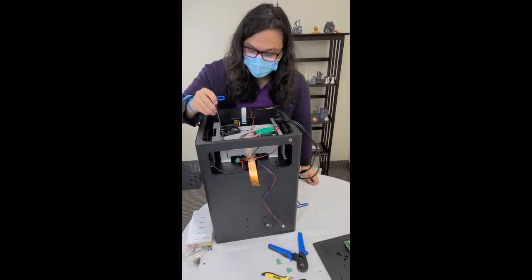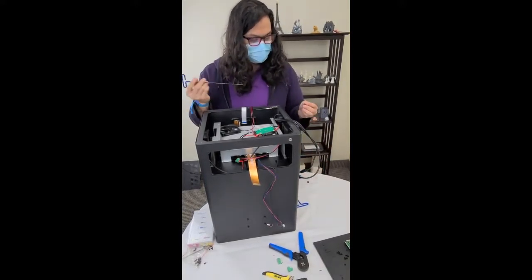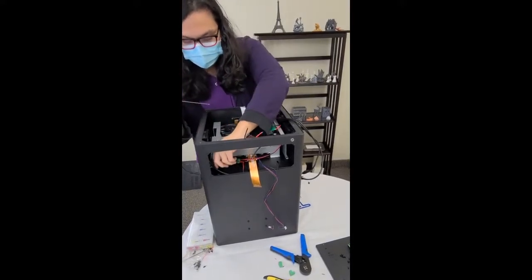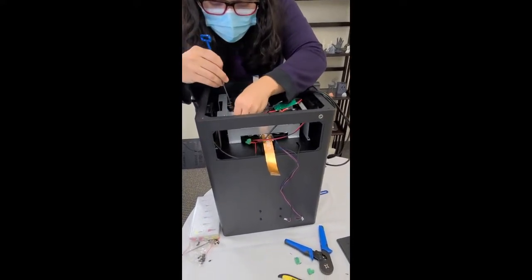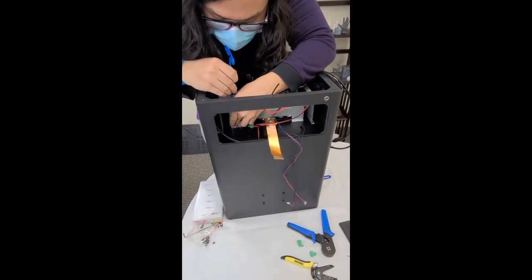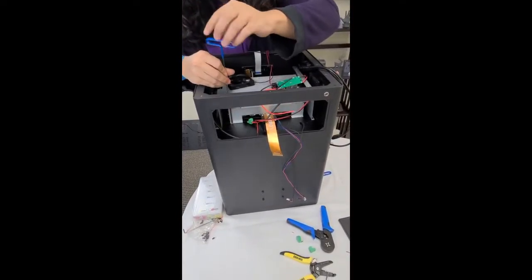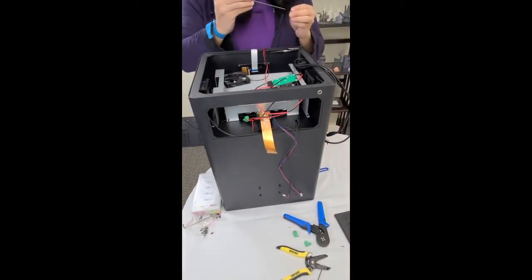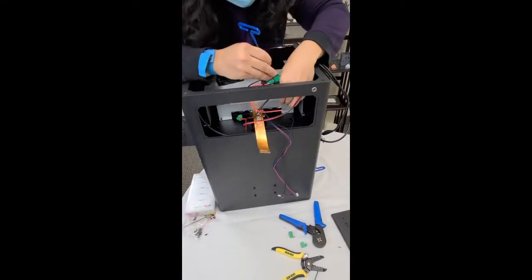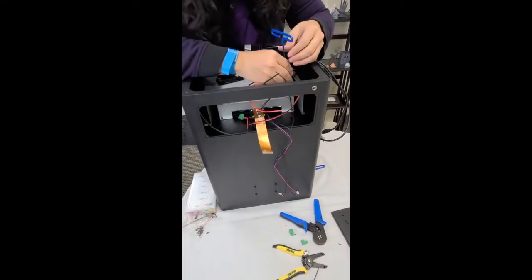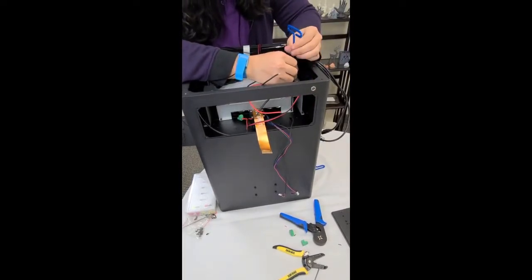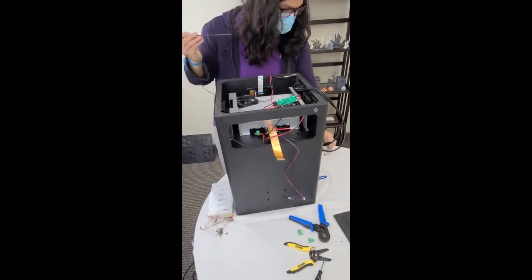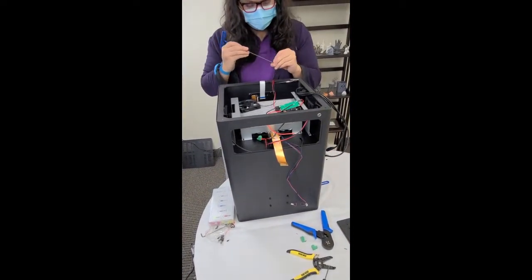So now we can secure the light source brackets onto the mid plate. You're going to use the four short 2.5mm screws here. I'm going to go ahead and secure the front first here. Now we can go ahead and secure the back.